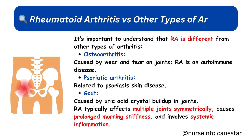It's important to understand that RA is different from other types of arthritis. Osteoarthritis is caused by wear and tear on joints, while RA is an autoimmune disease. Psoriatic arthritis is related to the psoriasis skin disease, and gout is caused by uric acid crystal buildup in joints.